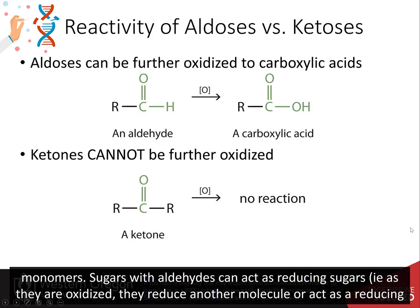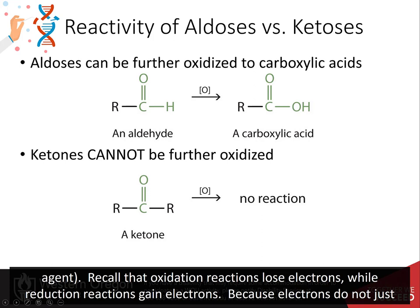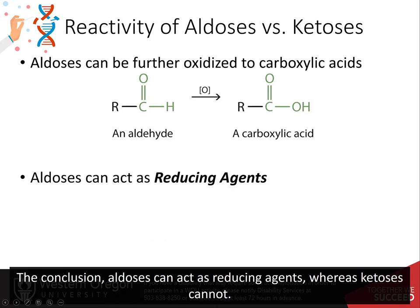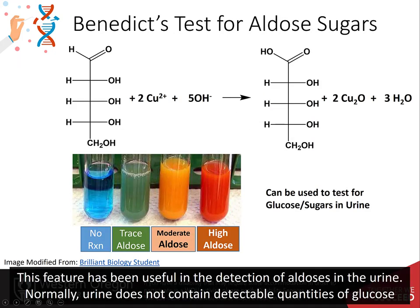Sugars with aldehydes can act as reducing sugars. That means as they are oxidized, they reduce another molecule or act as a reducing agent. Recall that oxidation reactions lose electrons while reduction reactions gain electrons. Because electrons do not just disappear, these reactions are coupled together — you cannot have oxidation without reduction or vice versa. The conclusion: aldoses can act as reducing agents, whereas ketoses cannot. This feature has been useful in the detection of aldoses in the urine.